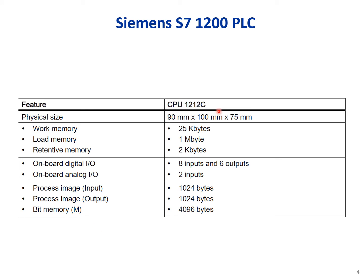The CPU is the 1212C. You can see the capacity of the memories, the number of digital and analog inputs and outputs, the process image input/output size, and the memory specifications.